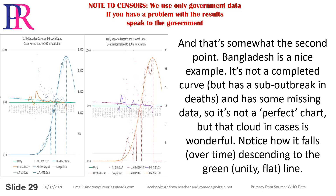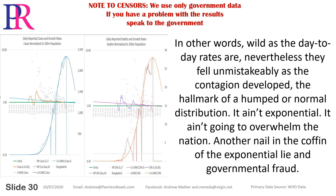Bangladesh is a nice example. It's not a completed curve, but has a sub-outbreak in deaths, and has some missing data, so it's not a perfect chart. But that cloud in cases is wonderful. Notice how it falls over time, descending to the green unity or flat line. In other words, wild as the day-to-day rates are, nevertheless they fell unmistakably as the contagion developed — the hallmark of a humped or normal distribution. It ain't exponential. It ain't going to overwhelm the nation. Another nail in the coffin of the exponential lie and governmental fraud.